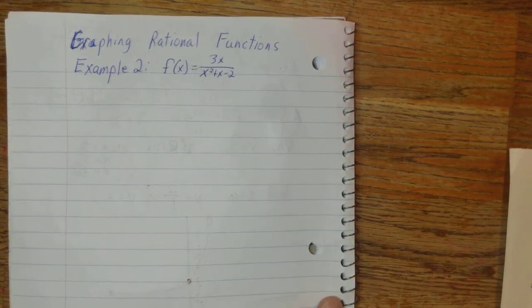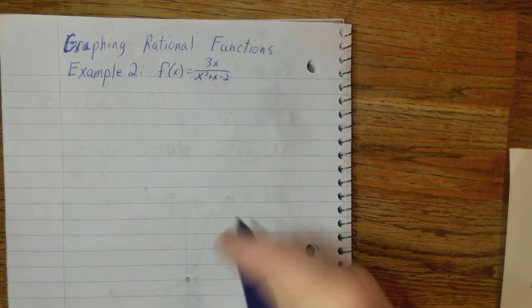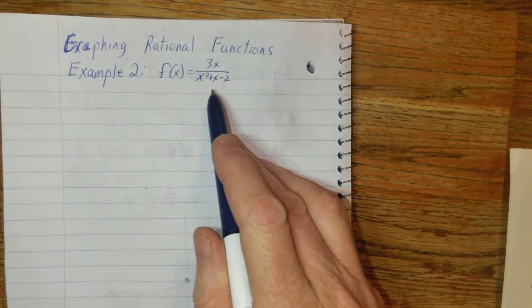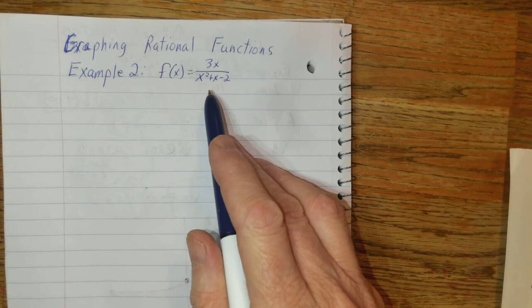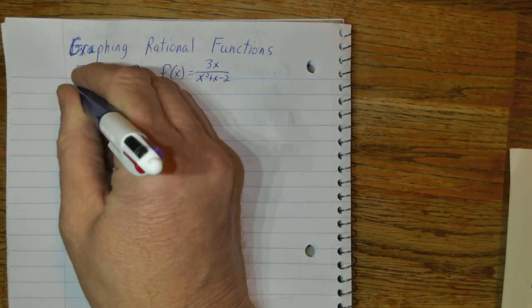Hi, everyone. Here we are. We've got example 2 now. f(x) = 3x over x squared plus x minus 2. We're going to grab that, and we'll just start with the domain.